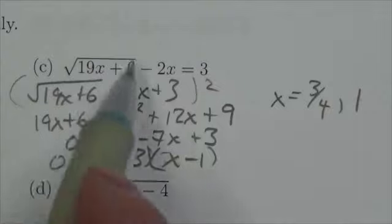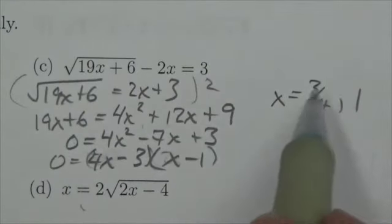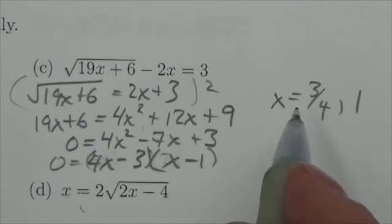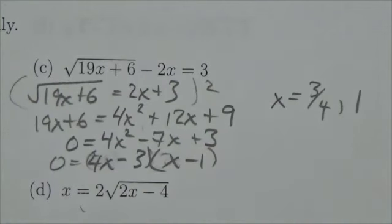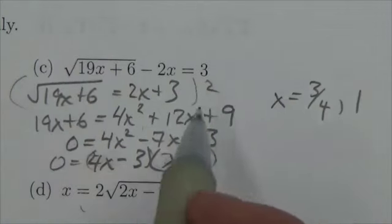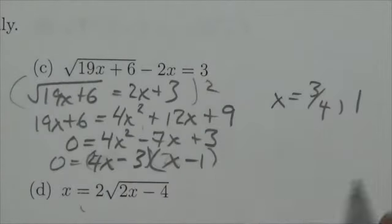So this one right here probably should go to my calculator. And when I plug in 3 quarters into that, that's the square root of 19 times 3 quarters plus 6 minus 2 times 3 quarters. Now if that works, that should be equal to 3 on my calculator and it does.